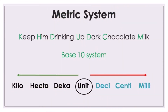The metric system is a system of measurement. I need you to use this mnemonic device: 'Keep him drinking up dark chocolate milk.' This is a base-10 system. K is for Kilo, H is for Hecto, D is for Deca, U is for the unit, D is for Deci, C is for Centi, M is for Milli. From the unit to the left you are going up — larger. From the unit to the right you are getting smaller.